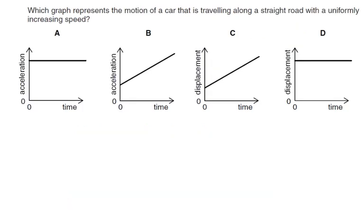Which graph represents the motion of a car that is travelling along a straight road with uniformly increasing speed? A key word here is 'uniformly' — that means it's changing at a constant amount. For it to be changing by a constant amount, you need a constant acceleration, which is exactly what's happening in A.